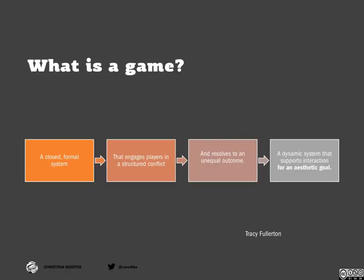Let's take a pause. We've all just created a game, but what is a game? How is it that we already know exactly what it is? Tracy Fullerton, again in her Game Design Workshop, calls it a closed formal system that engages players in structured conflict — that's all about the rules — and resolves it to an unequal outcome: win, lose, first place, second place. It's a dynamic system that supports interaction for an aesthetic goal.